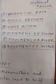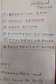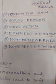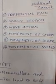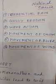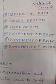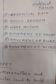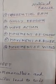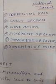Number six is movement of wind. Wind causes soil erosion mostly in arid and semi-arid regions where the soil particles are already loose.